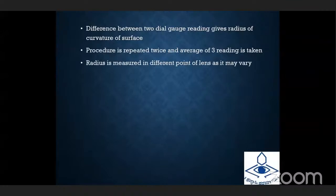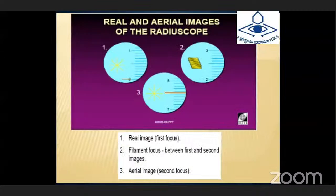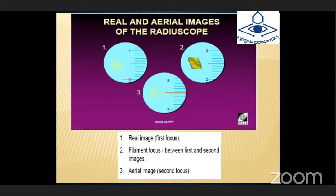The radius measured at different points of the lens may vary. As we can see in the first figure, that is the real image or first focus — the image may be in the form of spokes or a similar pattern. As we move the dial gauge, we can see the filament focus between the first and second image, as shown in figures two and three. Then, as we continue moving the dial gauge, we see the aerial image, which is the second focus. The difference between the first and second focus gives the radius of curvature of the lens.